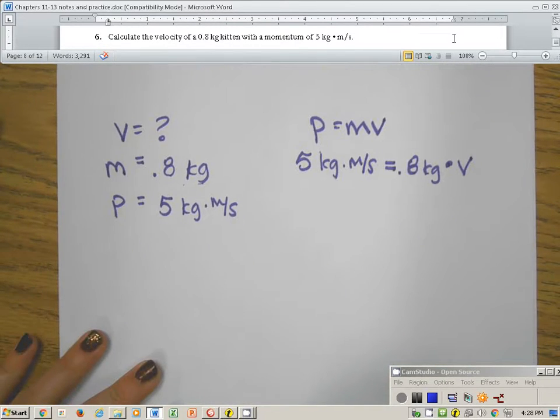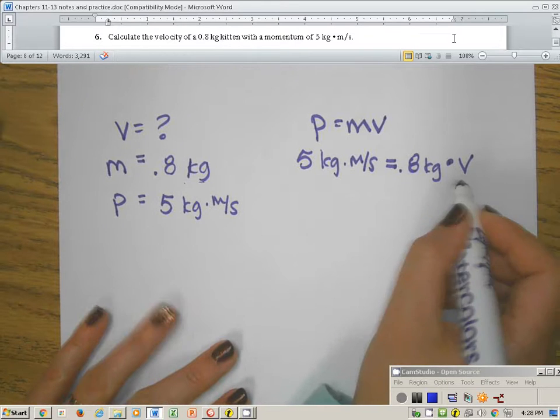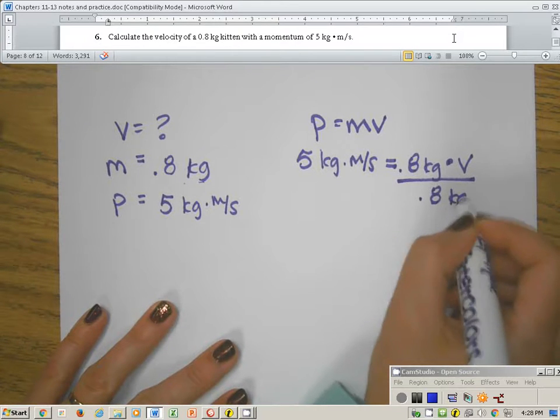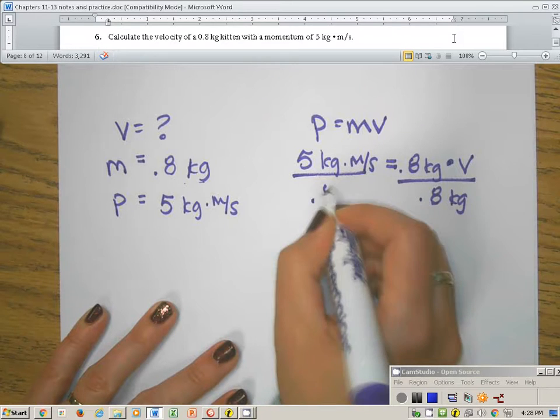Well, what do I do from here? I've got to get v by itself. Well, how I do that is I need to divide both sides by 0.8 kilograms.